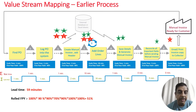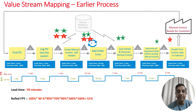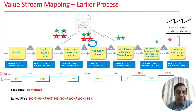The team created a current state value stream map. In this map, the first step is to find the PO, the second is to log the PO into the system, then create the manual invoice and add the header, followed by adding order lines. After that, they save the details and generate the manual invoice, then reconcile all important fields before sending, and finally email and print the invoice and send it to the collector. The cycle time and wait time together totaled 59 minutes, and the rolled first pass yield was at 51%, indicating a lot of rework in the process.